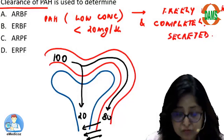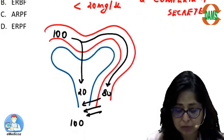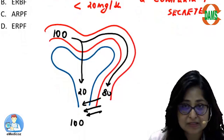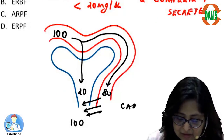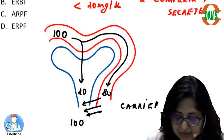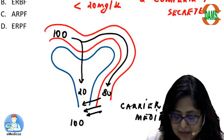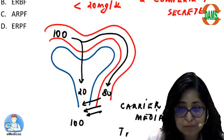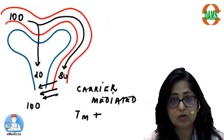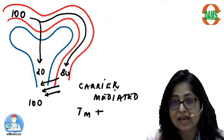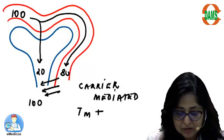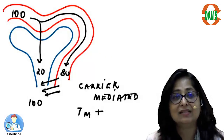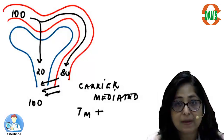This secretion of para-aminohippuric acid occurs in the PCT and is a carrier-mediated secretion. When I say carrier-mediated secretion, that means there is a transport maxima which is present. All carrier-mediated secretions have a maximum rate of transport, and so para-aminohippuric acid also has a transport maxima.